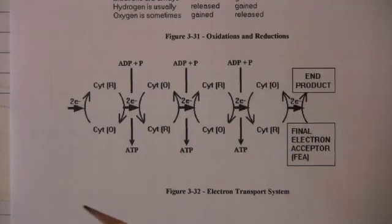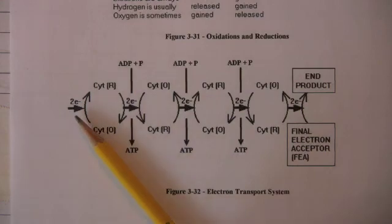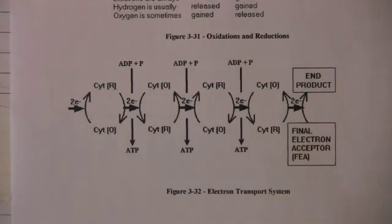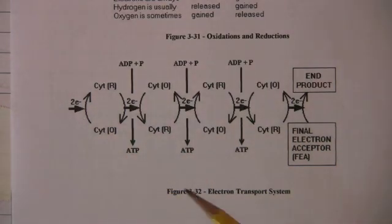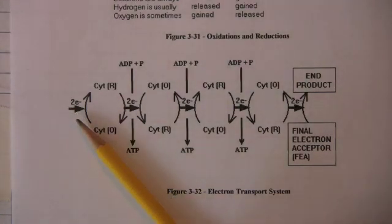Another question we might ask is, where do these electrons come from that enter the electron transport system? Well, it turns out they come from reduced coenzymes, the NADH2 and the FADH2. And we'll see shortly where these reduced coenzymes come from.